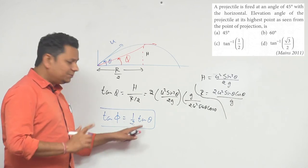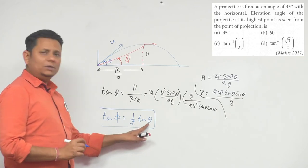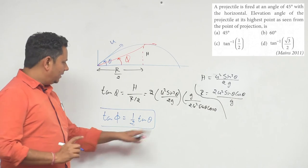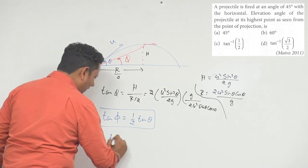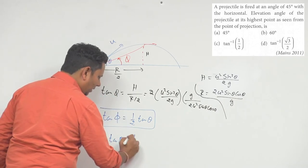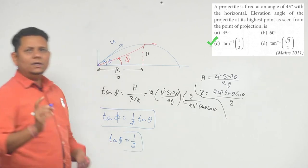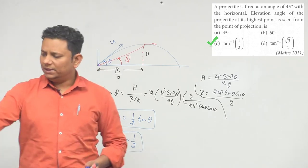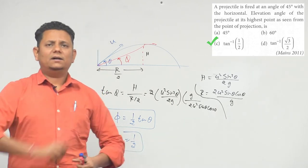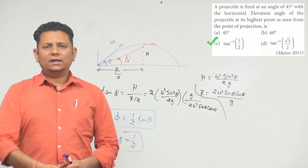In this particular question, theta value is given as 45 degrees, so tan theta equals 1. Therefore, tan phi equals 1/2, which means phi equals tan inverse 1/2. So option C, tan inverse 1/2, will be the correct choice.